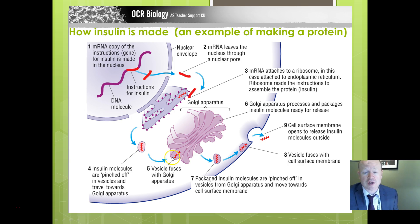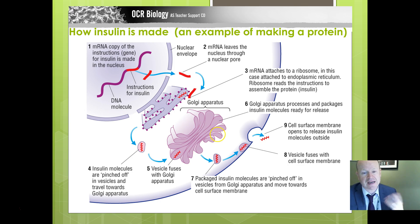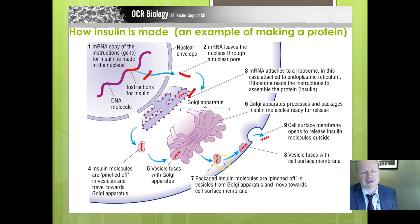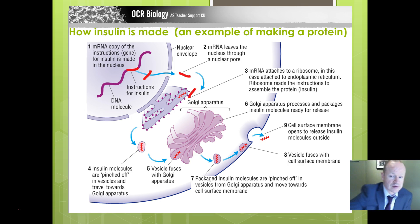The vesicle moves and fuses with the Golgi apparatus — also called the Golgi body or Golgi complex. The Golgi then packages the protein, sometimes adding substances to it to make it a glycoprotein, and prepares it for release. Vesicles pinch off from the Golgi, move to the cell surface membrane, fuse with it, and the substance is released. We'll revisit these membrane processes when we look at membrane structure.